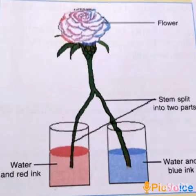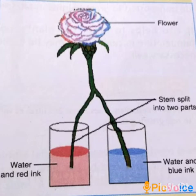Now I am going to explain an experiment to show that water absorbed by the roots of a plant is transported from the stem to leaves and flowers through the xylem. For this experiment, we will require a white flower of balsam or rose, two beakers, red and blue ink, a sharp blade, and water.